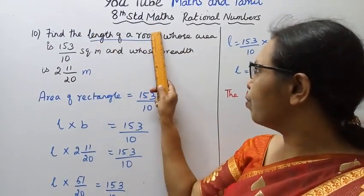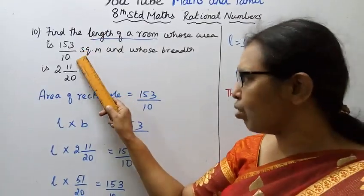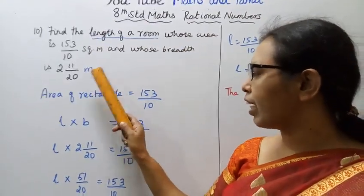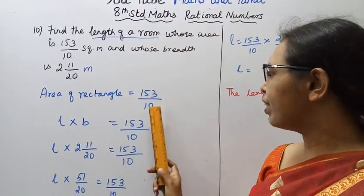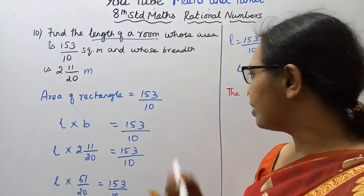Find the length of a room. The area is 153 by 10 square meter, okay?